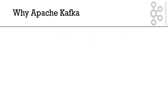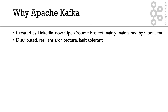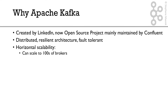So why would we even use Apache Kafka? Well, it was created by LinkedIn, and it's now an open source project, mainly maintained by a private company called Confluent, but it's under the Apache stewardship. It's distributed, resilient architecture, and fault tolerant, and basically it scales horizontally. There are Kafka clusters with over 100 brokers. It's proven by LinkedIn and many other companies that it can scale to millions of messages exchanged per second.